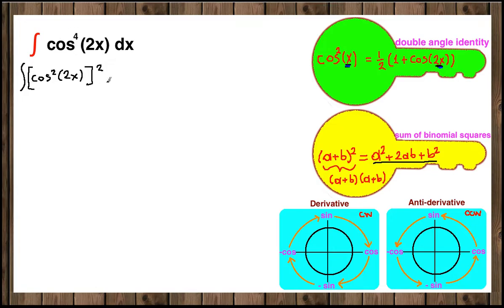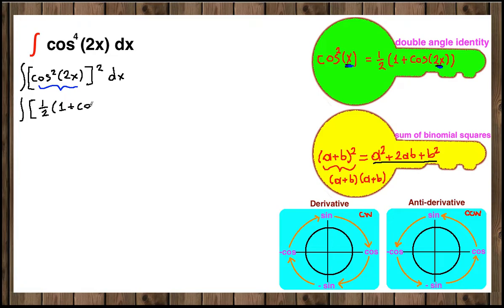Now we can substitute cosine squared with the double angle identity. The double angle identity is: cosine squared of x equals one half times the quantity 1 plus cosine of double the angle. So our cosine squared of 2x will turn into one half times 1 plus cosine of 4x.